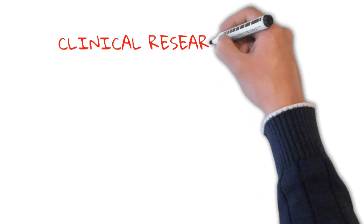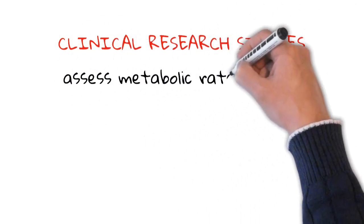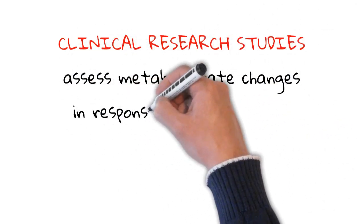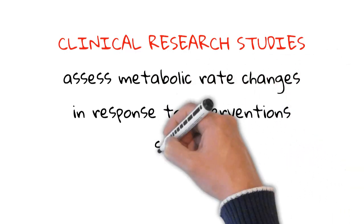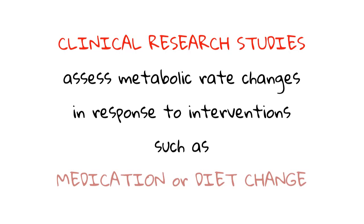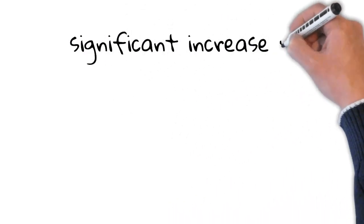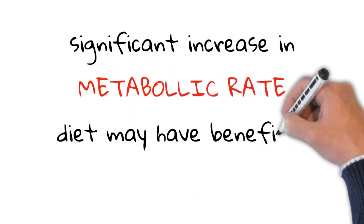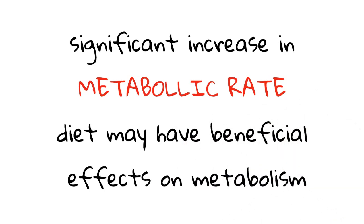Indirect calorimetry can be particularly useful in clinical research studies to assess metabolic rate changes in response to interventions such as medication or diet changes. For example, a study published in the Journal of Clinical Endocrinology and Metabolism used indirect calorimetry to measure the metabolic rate of participants with type 2 diabetes before and after they followed a low-carbohydrate diet. The results showed a significant increase in metabolic rate, indicating that the diet may have beneficial effects on metabolism.